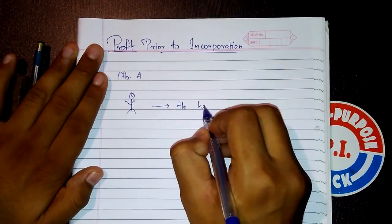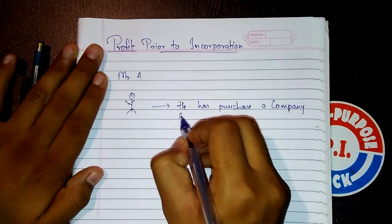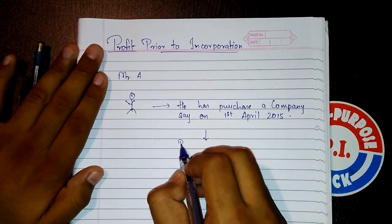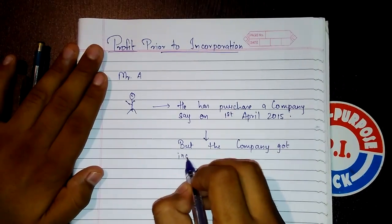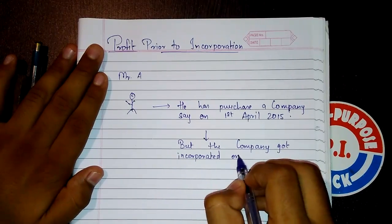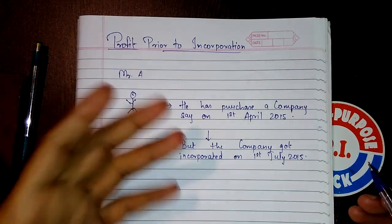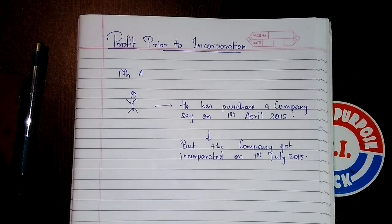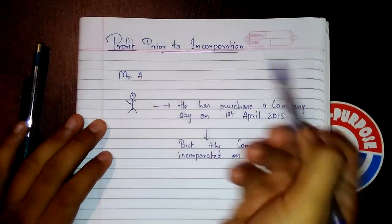Mr. A had purchased a company on 1st April 2015, but the company got incorporated on 1st July 2015. So tell me, from which date will Mr. A start his business — whether on the date of purchase or the date of incorporation? Mr. A will start his business on the very 1st day on which he purchased it.